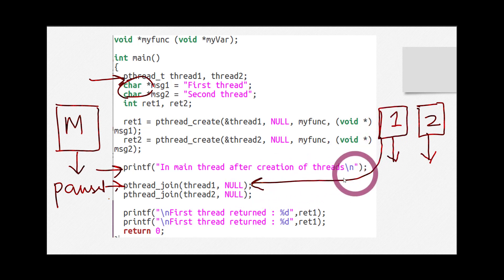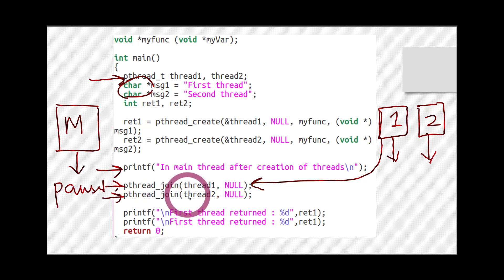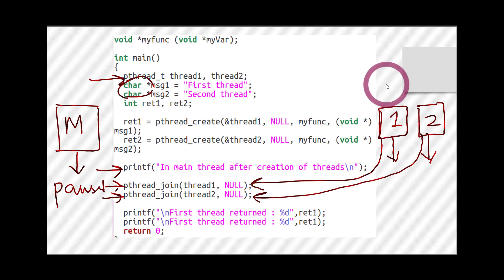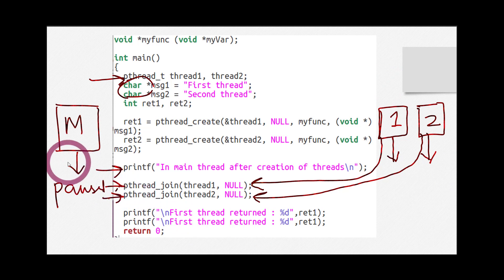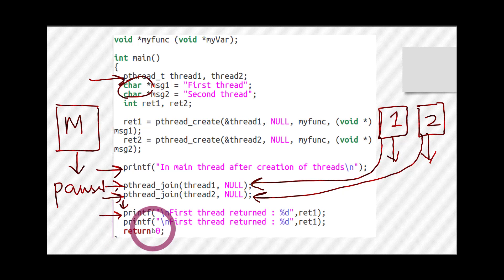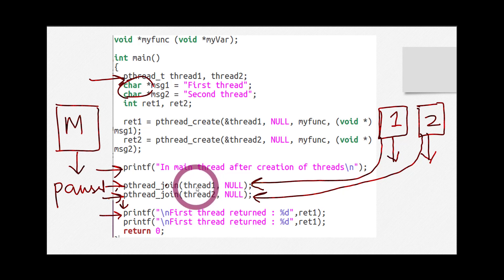When thread_one joins back, the next line is executed, which is another pthread_join - this time for thread_two. At this point, the main thread will again be paused and wait for the second thread to join. When the second thread completes its execution and joins back to the main thread, the main thread will resume. The important concept is that whenever you call pthread_join, the main thread is paused until the specified thread joins, then resumes.